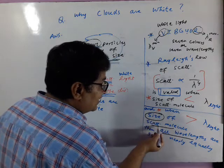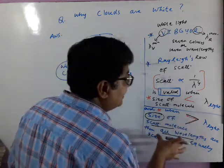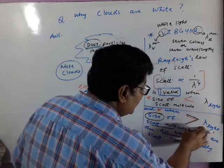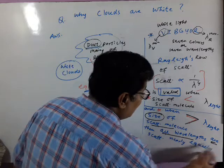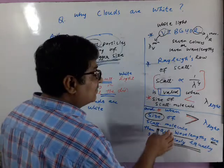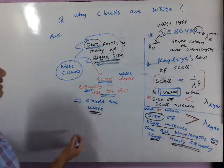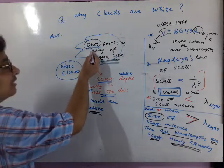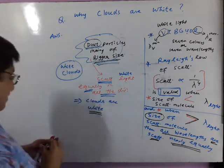See, jab size of scattering molecule bada hota hai, it is bigger size than the wavelength of light used. At that instant, all the wavelengths are scattered nearly equal. Jab sari wavelengths, sari color equally scattered honghe, to clouds white nager aenghe, kyunki white clouds ke anndar hote hai dust particles, jinka size bada hota hai. Got it?